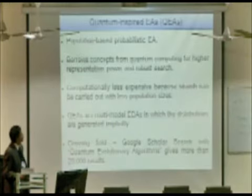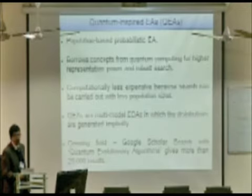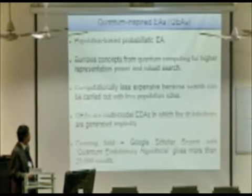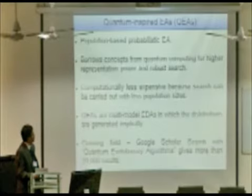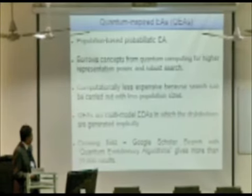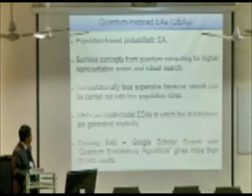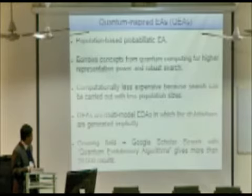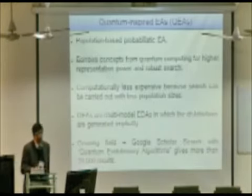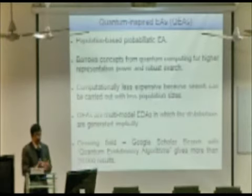They are basically population based probabilistic EAs, borrowing concepts from quantum computing for higher representation power and search. But they are computationally less expensive because search can be carried out with less population sizes. And also they can be modeled as multi-modal EDAs. So it's a pretty growing field and if you do a Google scholar search just with these words, quantum evolutionary algorithms, you get more than 20,000 results. And around 4,000 of them are just in 2011. So this is pretty new and growing.